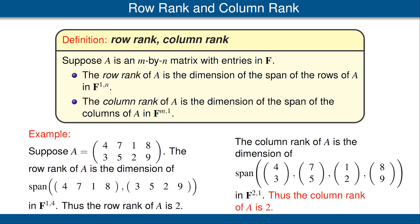The row rank of A is 2 and the column rank of A is 2 — those two numbers turned out to be the same. We will soon see that this is not a coincidence.